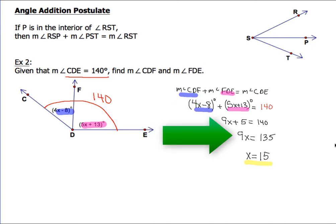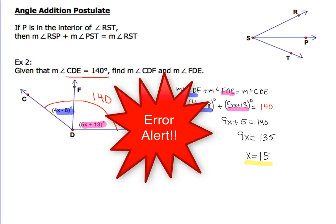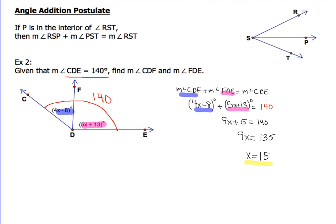Using the subtraction property of equality, we get 9x = 135. And last, using the division property of equality, we end up with x = 15. Common error alert. Most people think they're done because they got a value for x. Sorry to say, you're not. Reread the question and make sure that you find whatever it is you're asked to find, which in this case are the measures of angle CDF and FDE. To find each one of those angles, we're simply going to plug the value of 15 that we got for x in for each one of those angles.